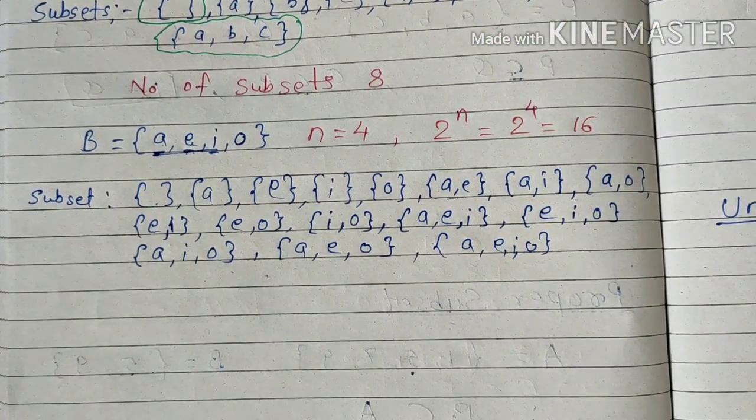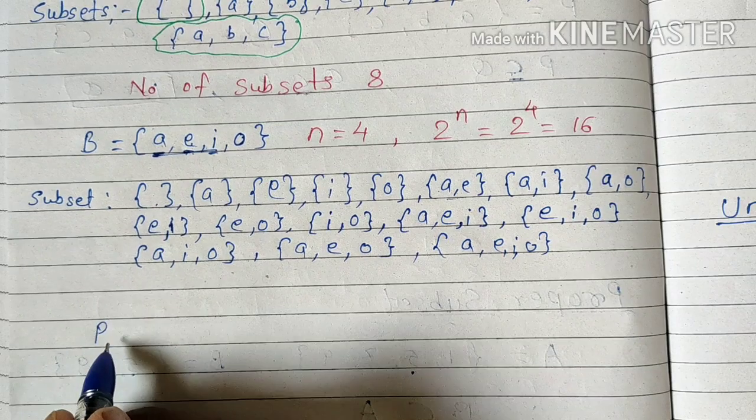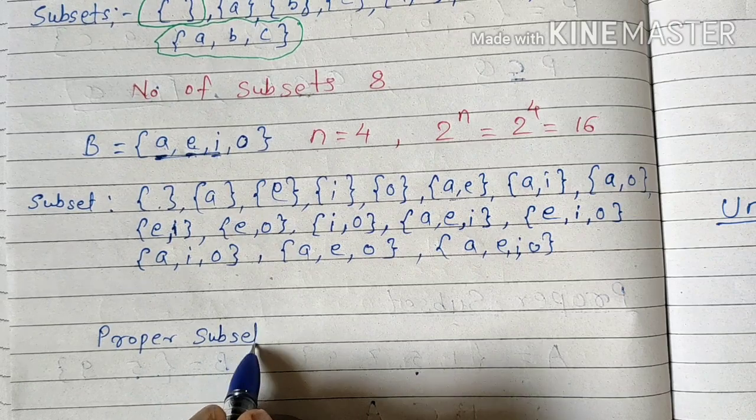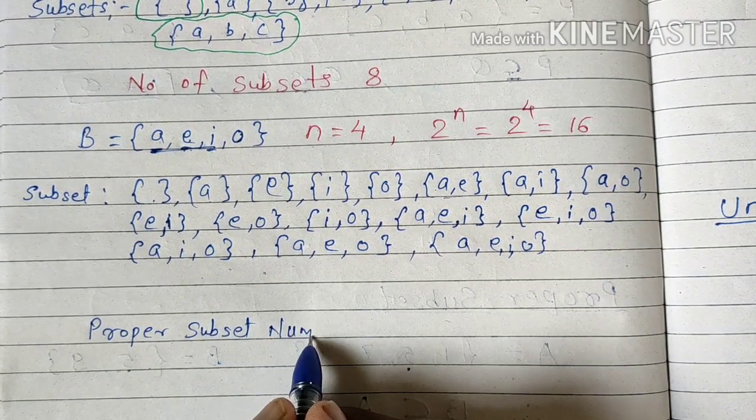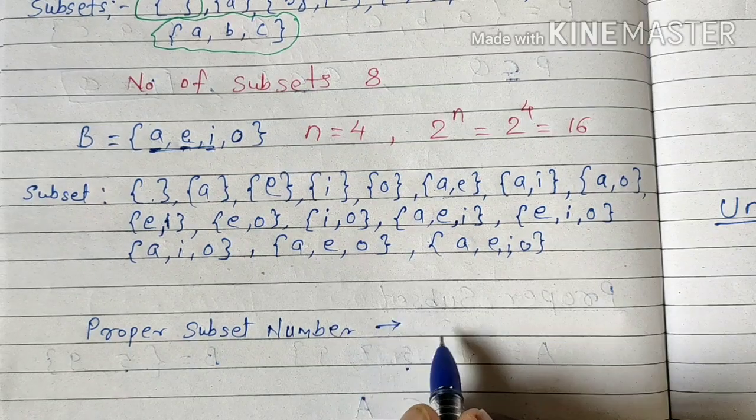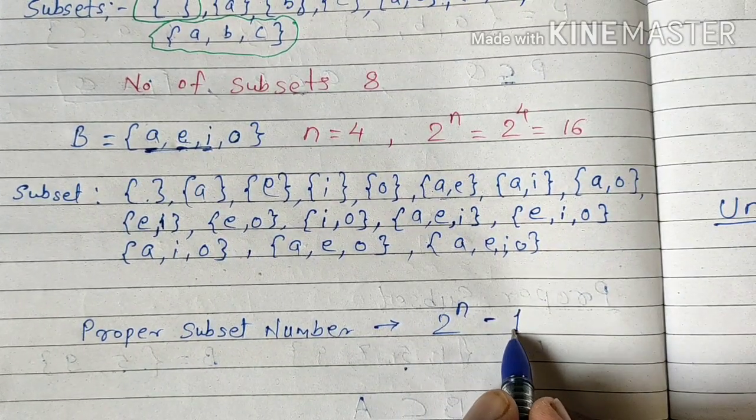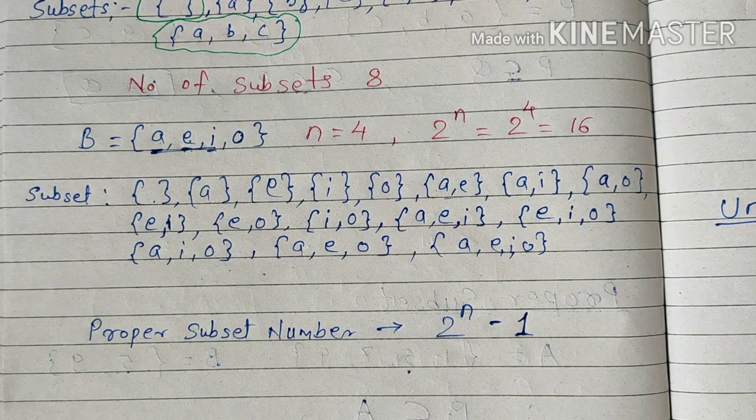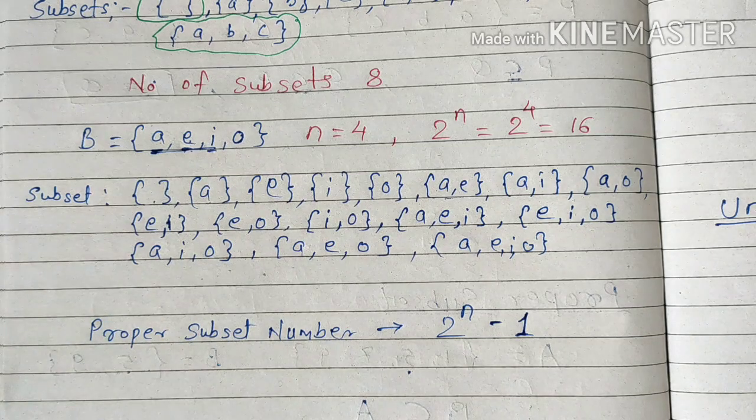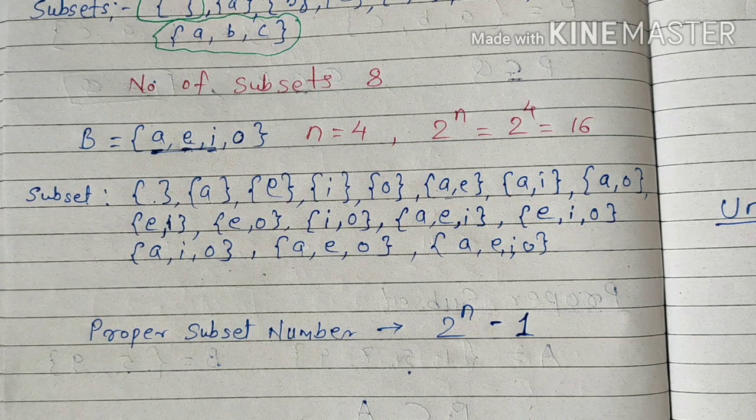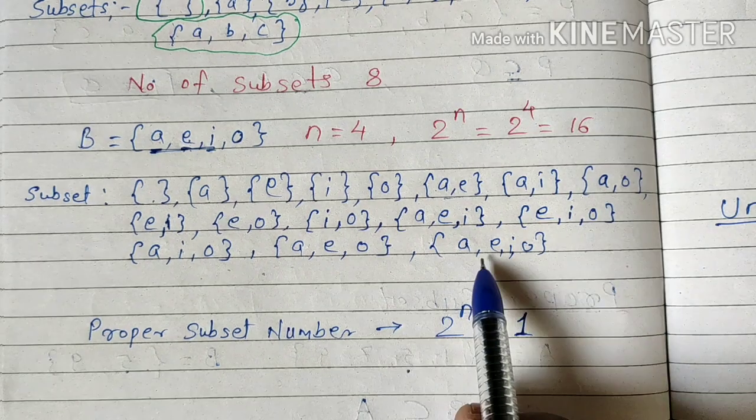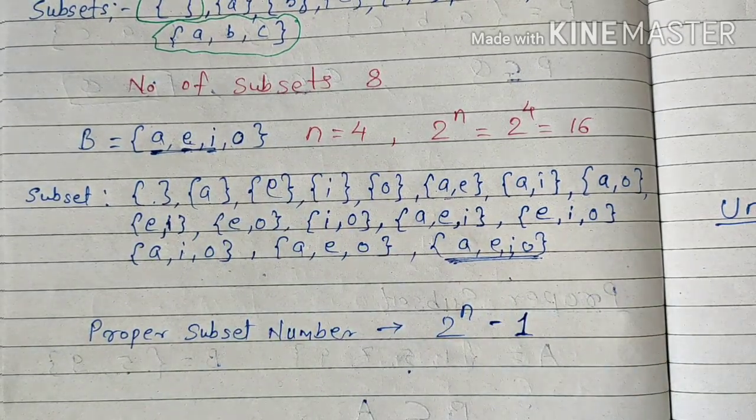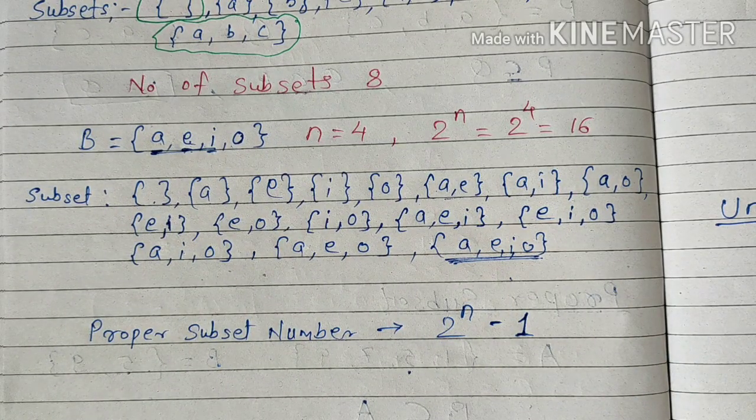Now, in case if we want to find out the proper subset number, how to find out that? 2 raised to n minus 1. Because as we have learned, equal sets are not proper subsets. So that means whenever we are writing the proper subsets, we will not include the last one which is itself. One subset will get removed from it.